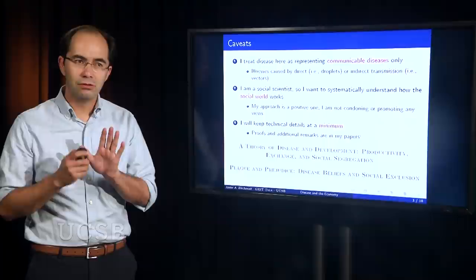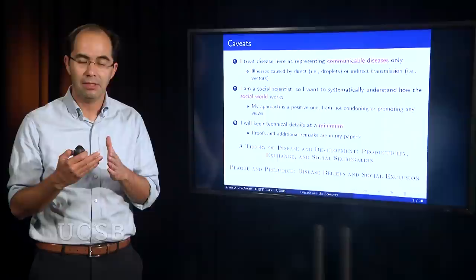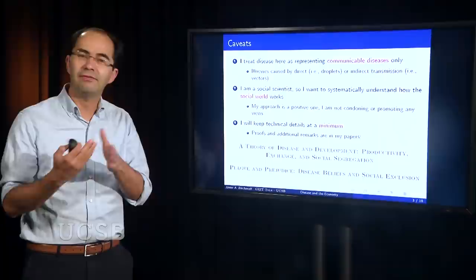I also want to start with a few caveats, just to sort of put the talk in some context. When I talk about disease today, I'll be very narrowly looking at what we call communicable diseases. And these are illnesses that are caused either by direct or indirect transmission. Transmissibility really is the essential element that I want to capture here when I talk about disease. Direct transmission represents droplets. The reason why we carry masks around in response to COVID is precisely because there's a direct way of transmission.